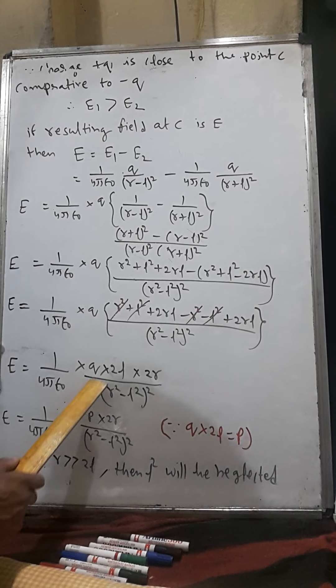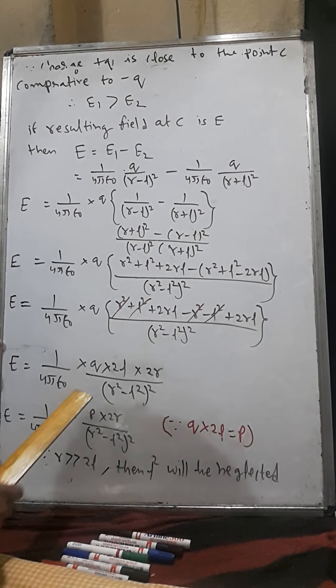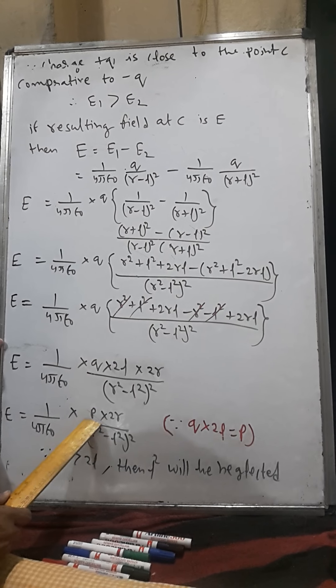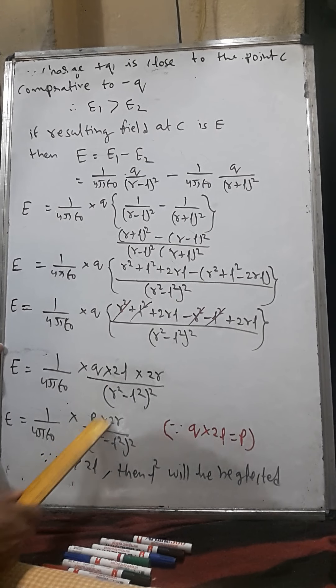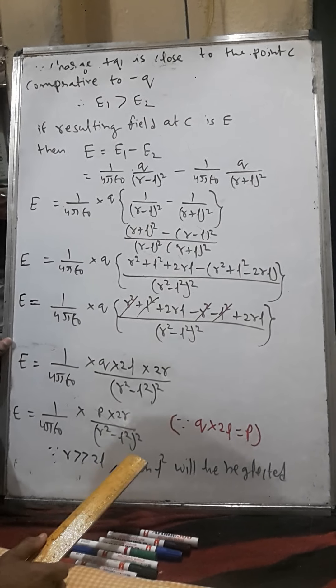P is represented by q into 2L, called dipole moment 2P. So what did I do in the next step? I wrote P with this formula. This is 2r. R square minus L square, whole square.